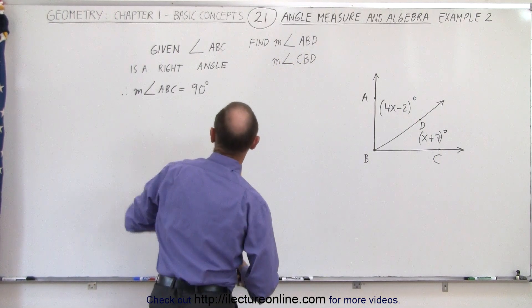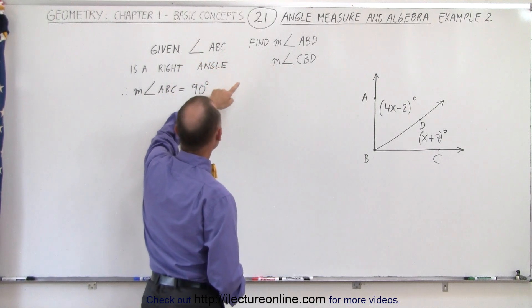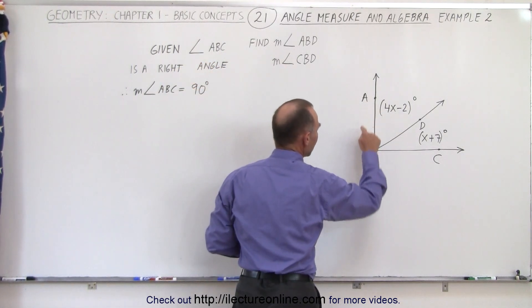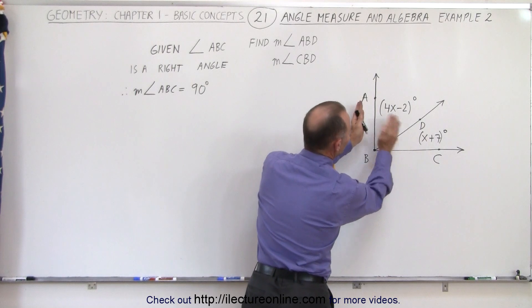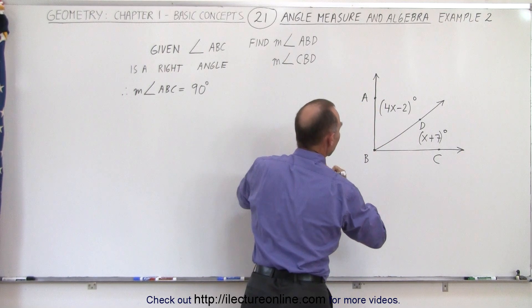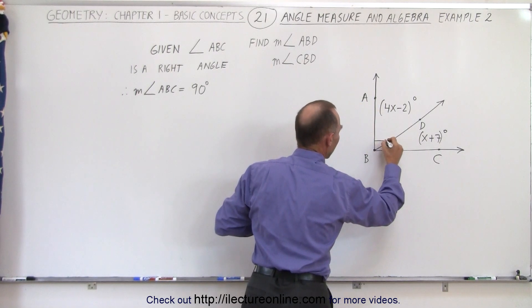We're told that angle ABC is a right angle, so the angle from ABC between these two rays is a right angle, so we can indicate that by drawing these.